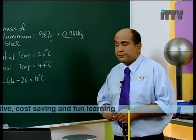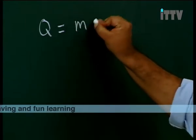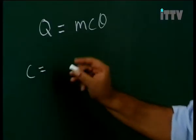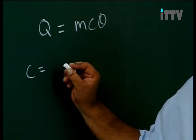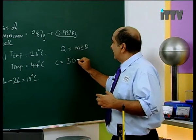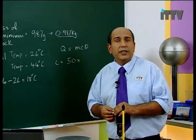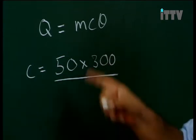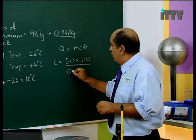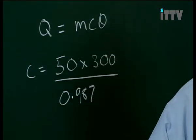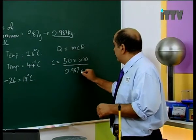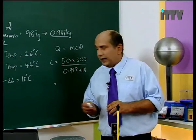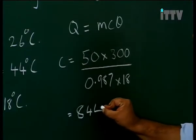From here we should be able to calculate our temperature difference, which is Theta: 44 minus 26 equals 18 degrees Celsius. With all of this information we can calculate the specific heat capacity of aluminium. Q equals MC Theta, so C equals Q over M Theta. C equals the power supply 50 watts times 5 minutes, which we change into seconds: 5 times 60 equals 300 seconds. Divided by the mass 0.987 multiplied by the temperature change 18. If you do this calculation, you get a value of 844.3.